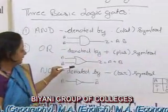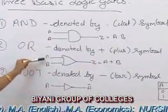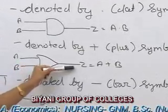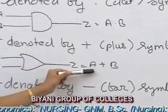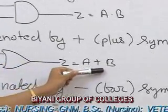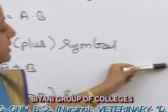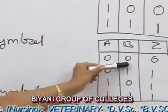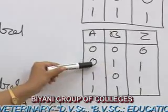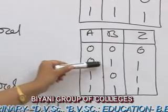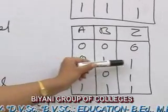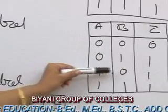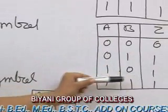OR gate is denoted by plus symbol. Here we can see the diagram with inputs A and B. In this, if we enter both 0 then we get 0. If we enter A=0, B=1 then we get 1. If we enter A=1, B=0 then we get 1.